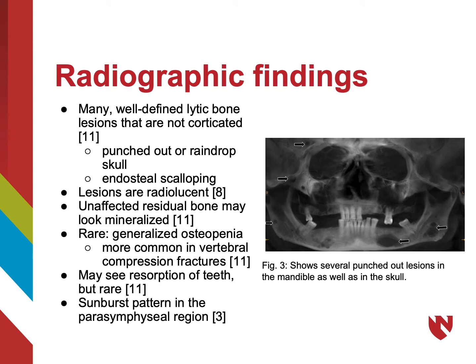Radiographically, multiple myeloma will typically present as many well-defined lytic bone lesions that are not corticated, creating a punched-out or raindrop appearance as seen in figure 3. It is possible for the appearance to be one single lesion, but it will still have a well-defined border when compared to a metastatic focus. There can also be endosteal scalloping due to these lesions.